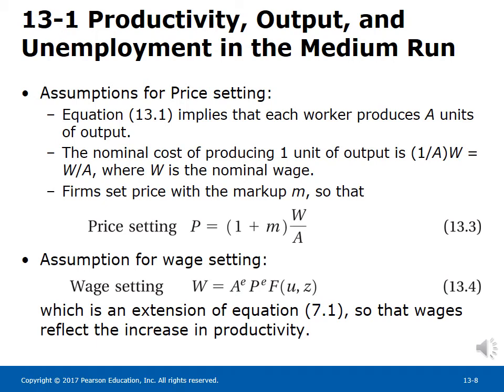Assumptions for the price-setting equation: Equation 13.1 implies that each worker produces A units of output. The nominal cost of producing one unit of output is 1 over A times W, which equals W over A, where W is the nominal wage. Firms set price with markup M so that P equals (1 + M) times W over A. For wage-setting, equation 13.4 shows that W equals A-expected times P-expected times f(u, z), which is an extension that allows wages to reflect the increase in productivity.